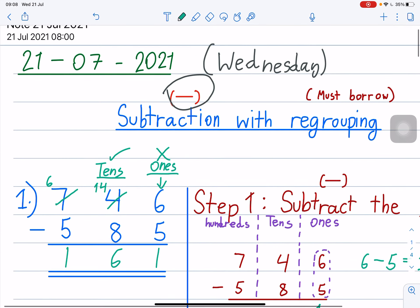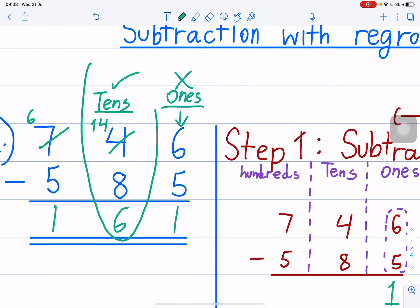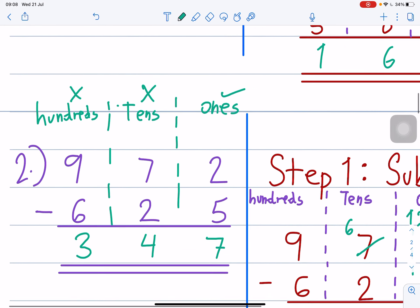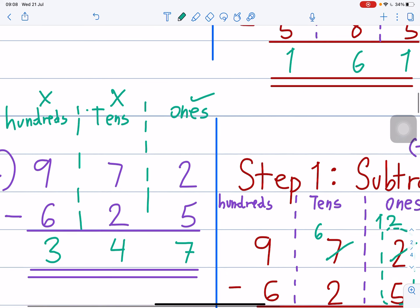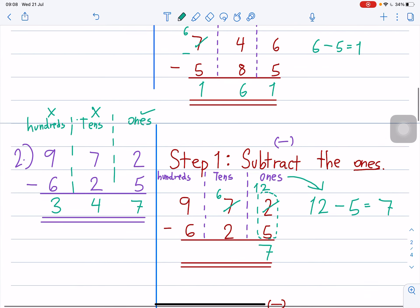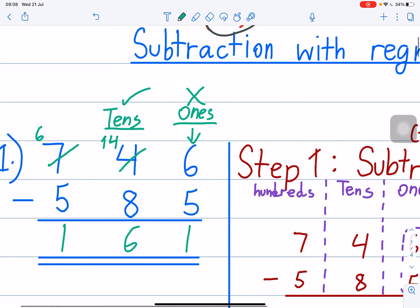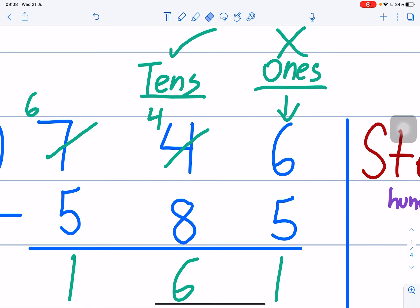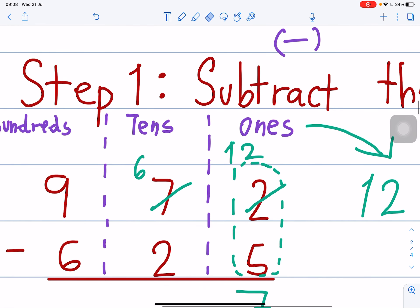Number 1. Borrow. Place value, tens only. Here. Borrow. Only this one. But, number 2. You borrow here. So, always borrow number here. Borrow. Borrow number 1. Here. Borrow number 1.